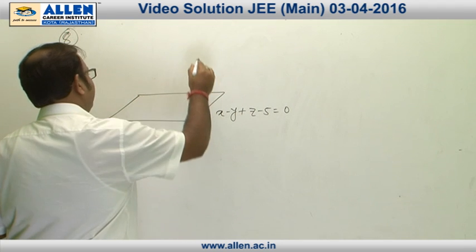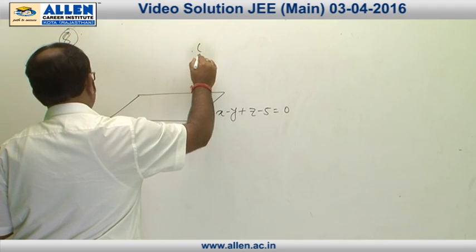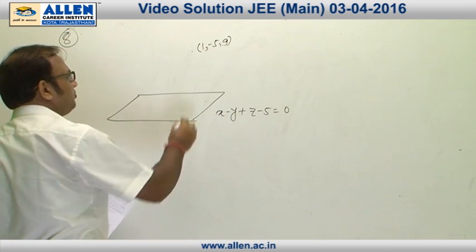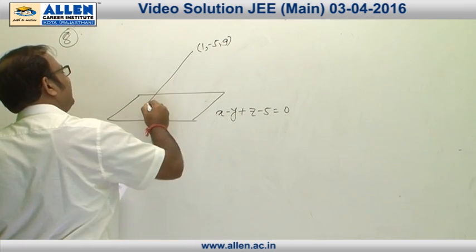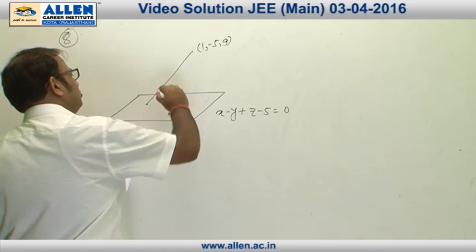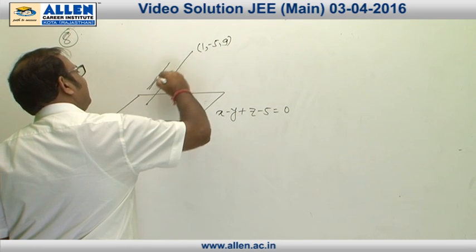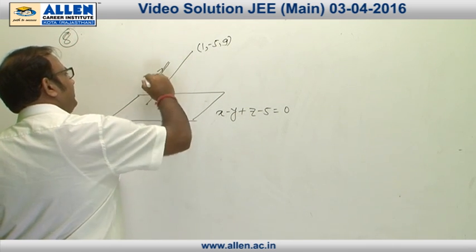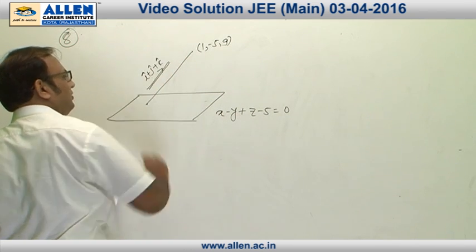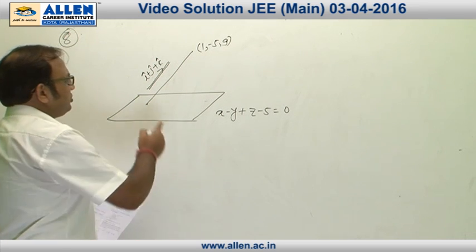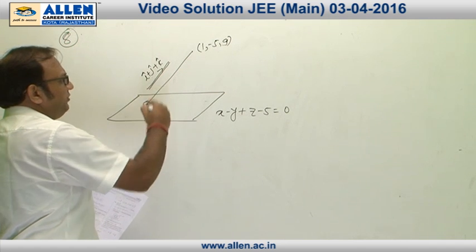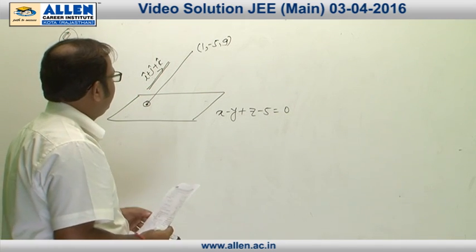In question 8, we are given a plane x - y + z - 5 = 0 and a point (1, -5, 9). We have to measure the distance of this point from the plane along a direction parallel to the line x = y = z. The vector parallel to this line is i + j + k.